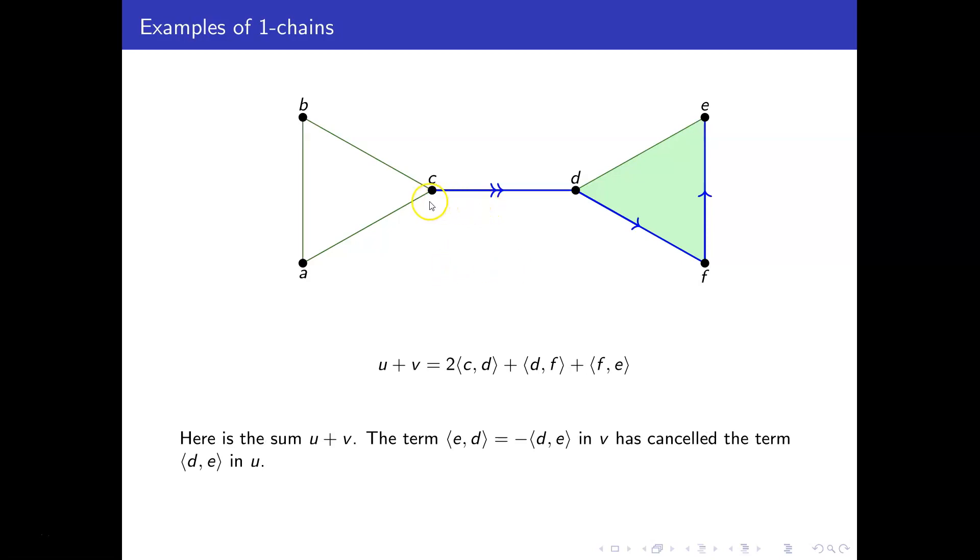So now this picture shows u plus v, where we had u and v before, as they were before. And we had a DE in u, which is cancelling against the ED in v, so we don't have an edge appearing here anymore. We've just got twice CD plus DF plus FE. That's our 1-chain u plus v.